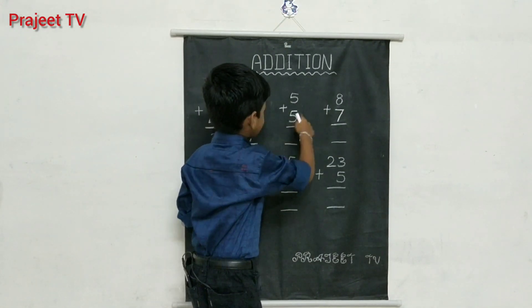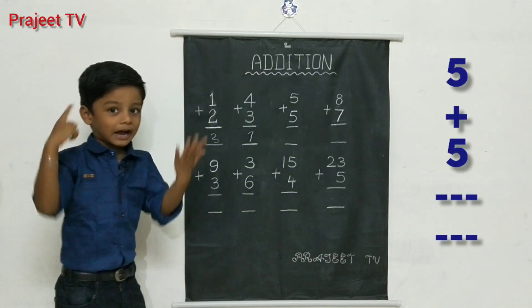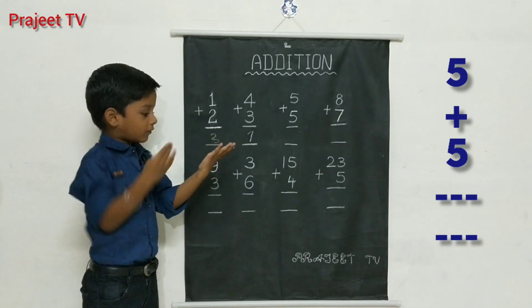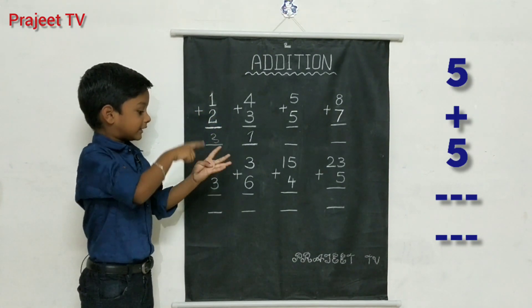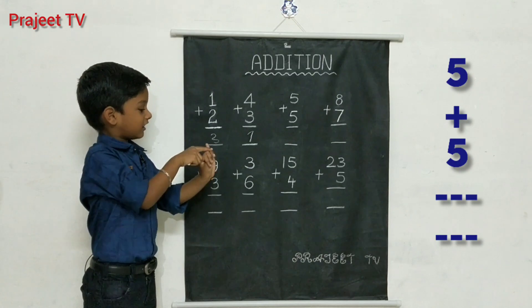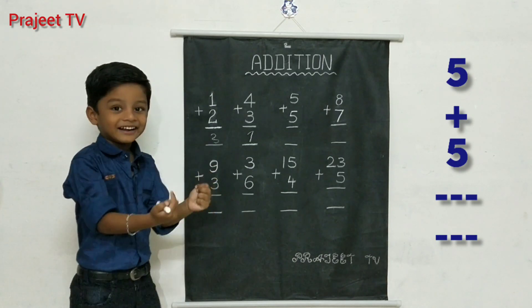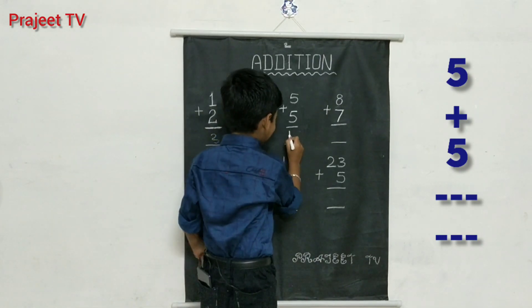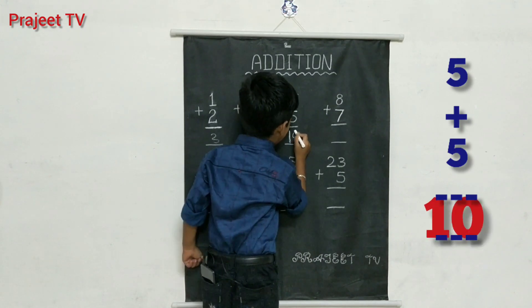Five plus five. Five in the mind, five in the fingers. Five after six, seven, eight, nine, ten. Answer: ten.